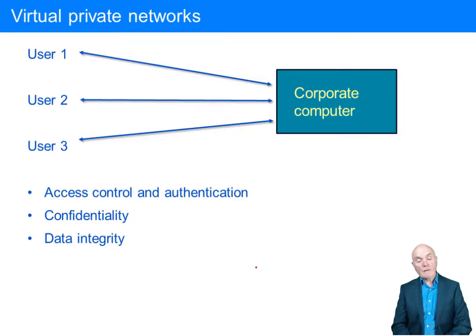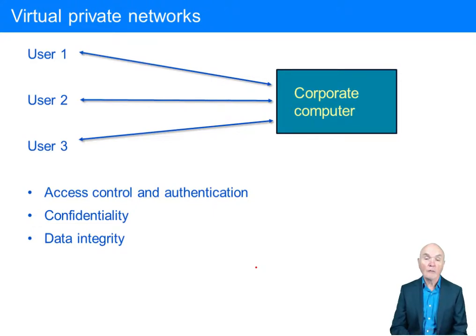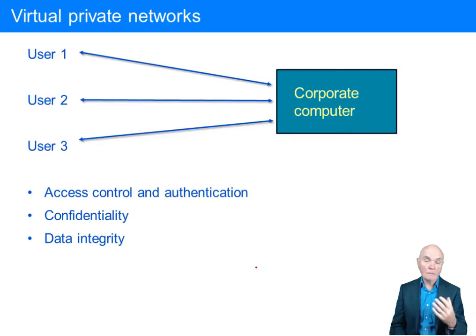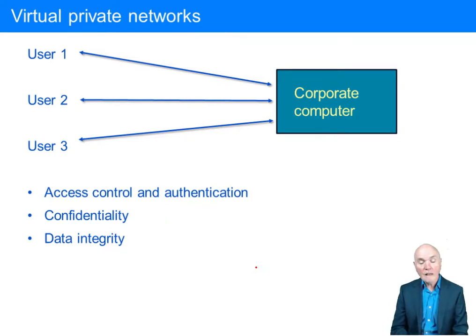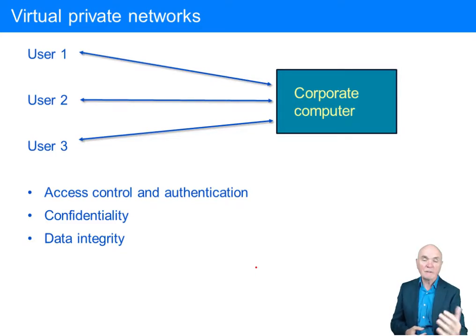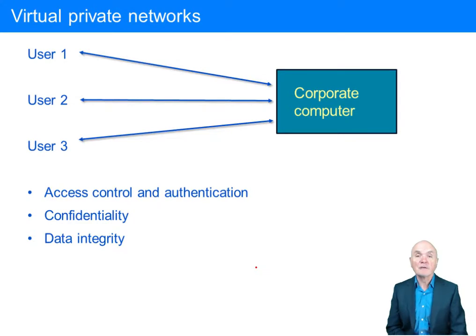Many organisations now use virtual private networks. Previously, networks meant perhaps 12 machines in an organisation connected by a special cable — fairly self-contained. When internet access opened things up, there were new dangers, but at least communication between colleagues went around that special cable with relatively little danger of infiltration.